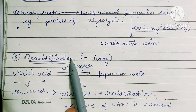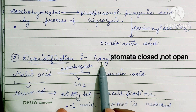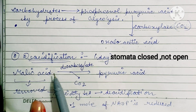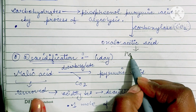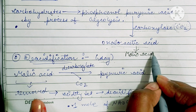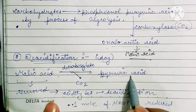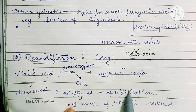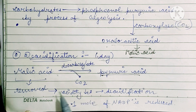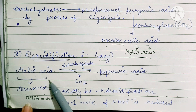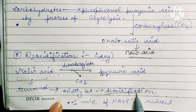The second step is deacidification. During the daytime, when light is present and stomata are open, malic acid — which was formed from oxaloacetic acid — undergoes decarboxylation, meaning CO2 is eliminated. Malic acid converts into pyruvic acid, which further converts back into phosphoenol pyruvic acid, making it a cyclic process. Due to the removal of malic acid, acidity decreases in the cell — this is called deacidification.